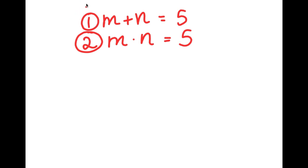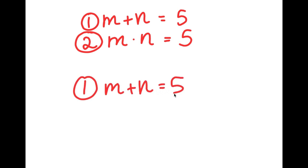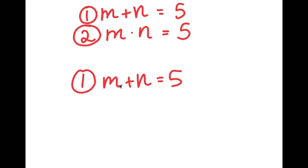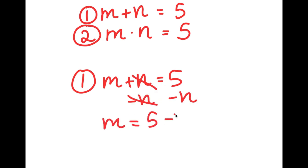My first equation is m plus n equals 5. What I'm going to do is rewrite this to get the value of just one variable. I'm going to choose m. To get the value of m, I have to get rid of n by subtracting n on both sides. So these two cancel out and I get m is equal to 5 minus n.